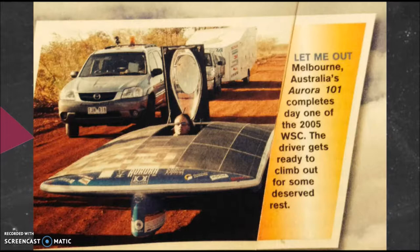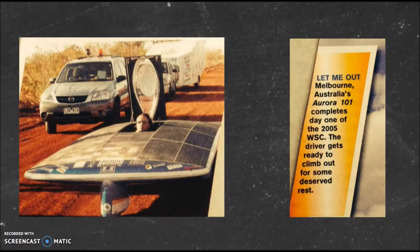So if you're looking at this, this guy is obviously in a solar paneled car. And it says, let me out. Melbourne, Australia's Aurora 101 completes day one of the 2005 WSC. The driver gets ready to climb out for some deserved rest. So I guess with the top coming up there, he's getting ready to get out. So what are we seeing other than the picture? We're seeing the side stuff, right? Here's another one. We separate them, and you realize that you have to make sure that you're reading this, not just looking at the picture and moving on. This on the right, right here, helps inform the article itself. So text features, again, are so important to what you're reading.